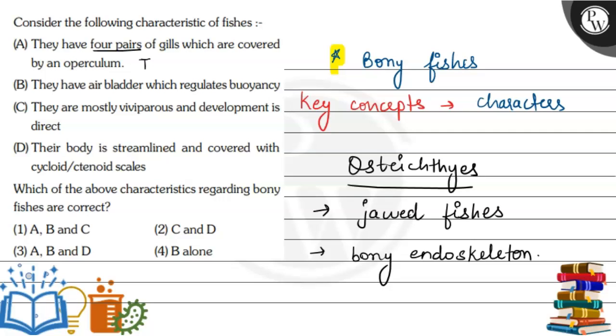Let's move ahead. When we talk about statement B, it says they have an air bladder which regulates buoyancy. This is absolutely correct. They have air bladders. So this statement is also correct.